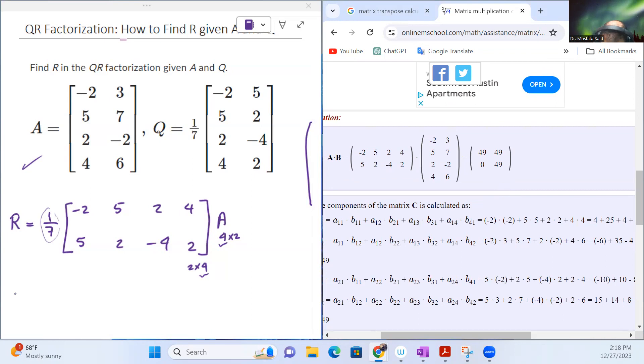And here is - so R equal to 1 over 7, 1/7: 49, 49, 49, 0, 49, 49. 49 is equal to 7 times 7, right? So we can multiply all the elements inside this matrix by 1/7, and that will give us 7, 7, 0, 7. That's the correct answer.